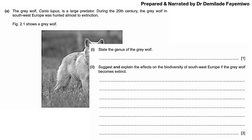The question asks: state the genus of the gray wolf. Whenever you have a scientific name — be it of a plant or an animal — the first word is the genus. In this case, the scientific name is Canis lupus, so the genus is Canis.